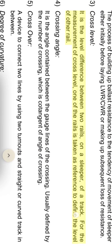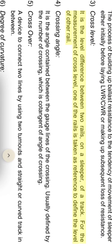Cross level: it is the level difference between two rails on a sleeper of a track. For the measurement of cross level, one of the rails is taken as reference to define the level of the other rail.